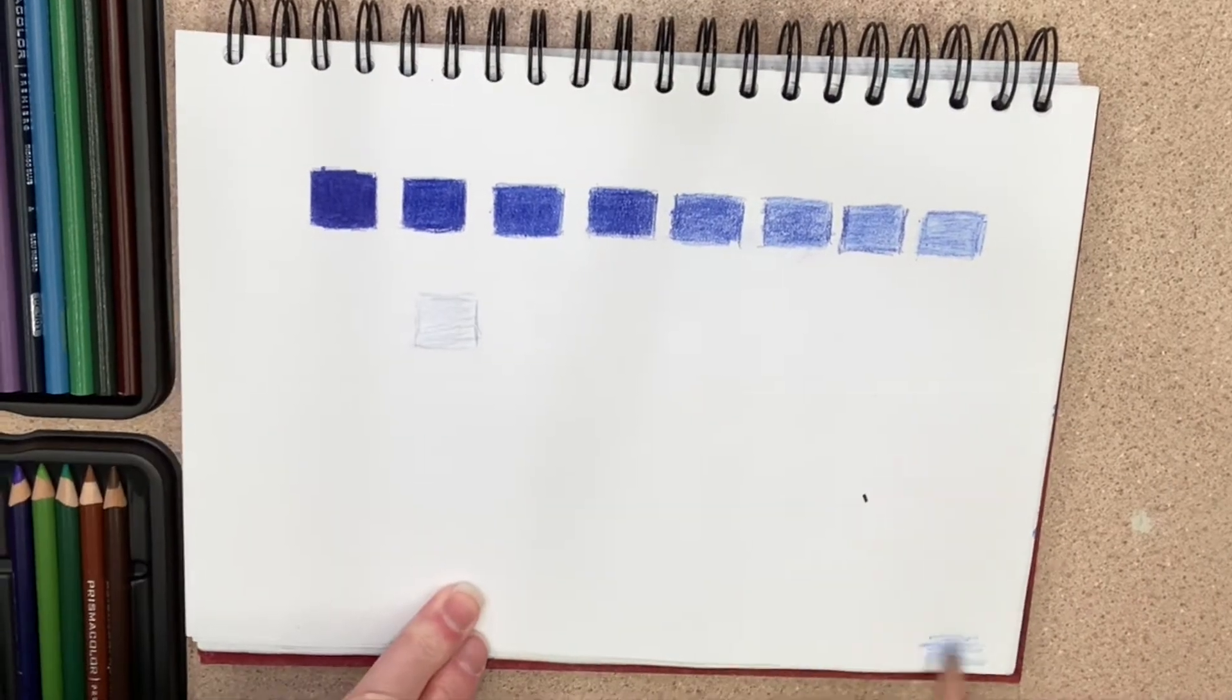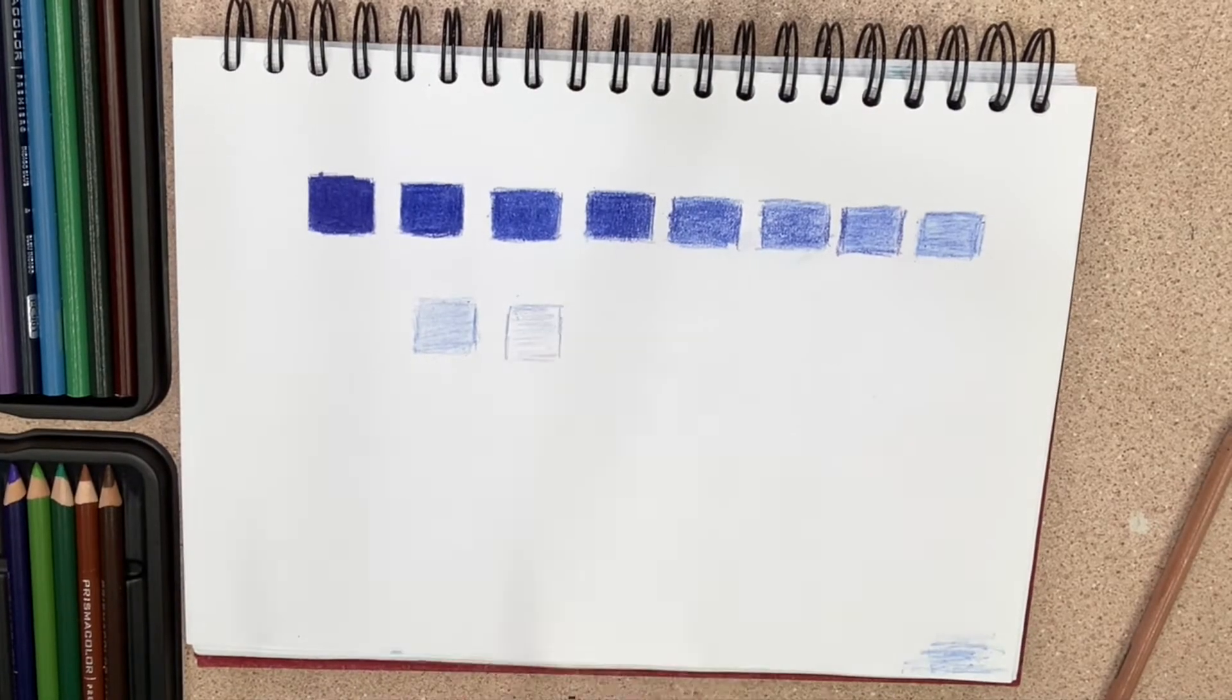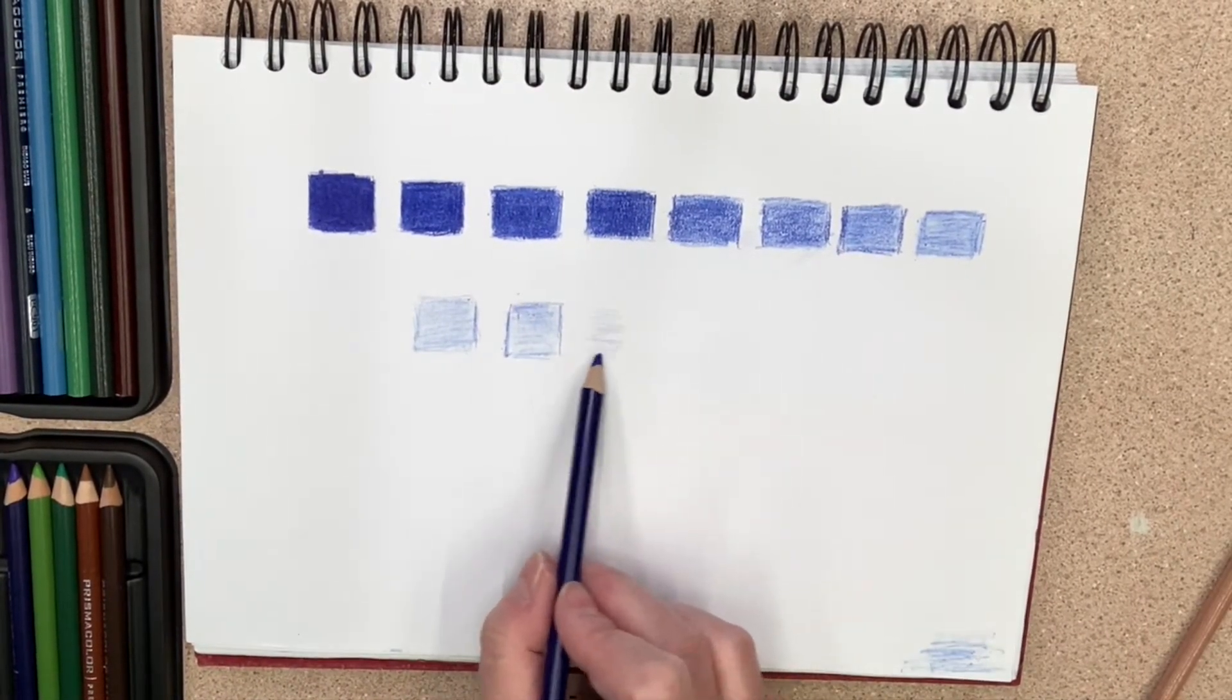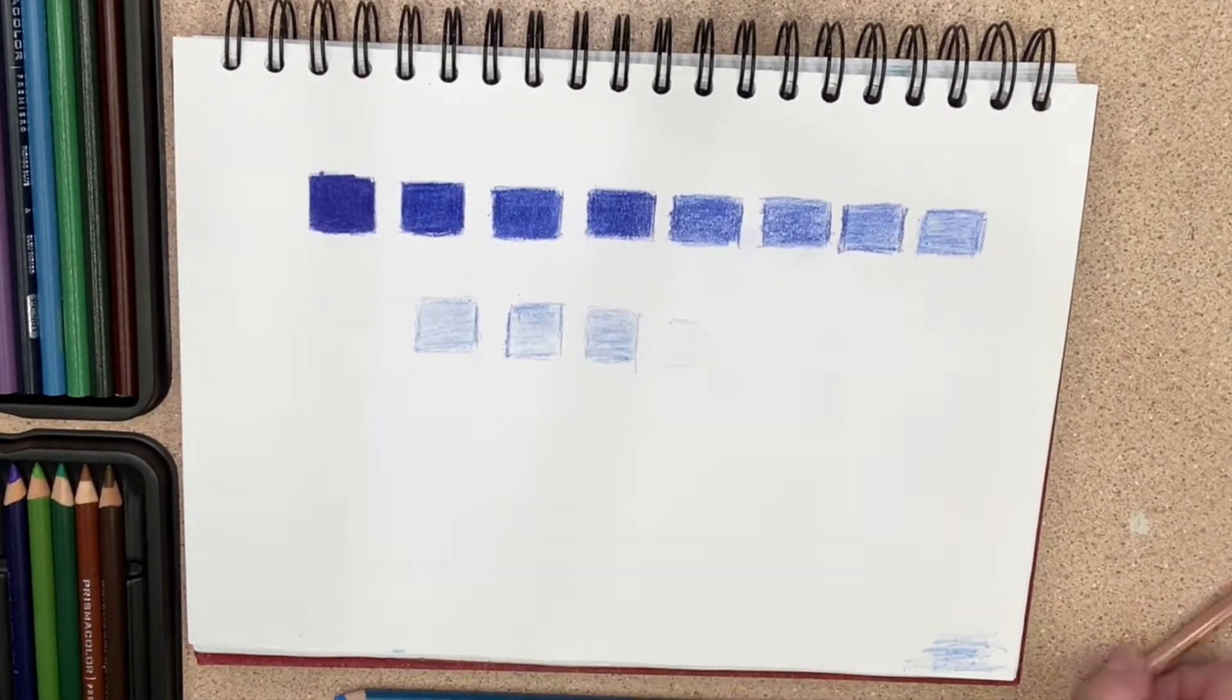You will notice that in the corner, I wiped off my blender. You can also sharpen it with the Prismacolor sharpener. I recommend that because the pencils for Prismacolor are a little bit temperamental.